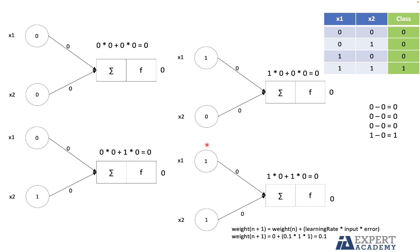Looking at the last row in detail: the current weights are 0, 0. The learning rate — a parameter specified by the developer that indicates how fast the weights will be adjusted — is set to 0.1 for this example. Multiplying by the input (which is 1) and the error (which is 1), the result is 0.1. So we update the weights from 0 to 0.1.